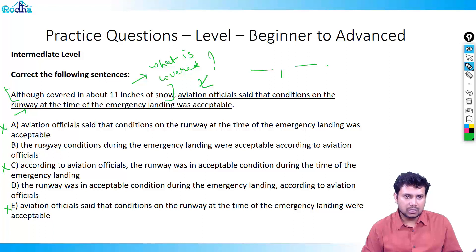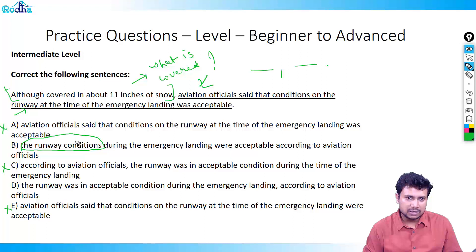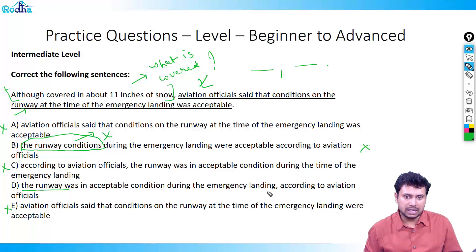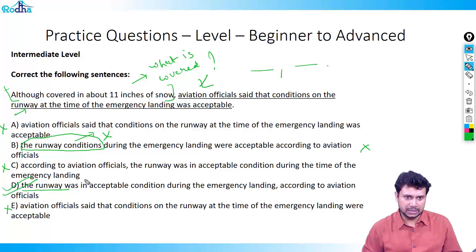Option B says 'although covered in about 11 inches of snow, the runway conditions' — but it is not the runway conditions that are covered in snow, it is the runway itself. So B is wrong. Option D says 'the runway was' — now you are correctly referring to the runway being covered in 11 inches of snow — 'was in acceptable condition during the emergency landing according to aviation officials.' This makes complete sense, so the answer is option D.